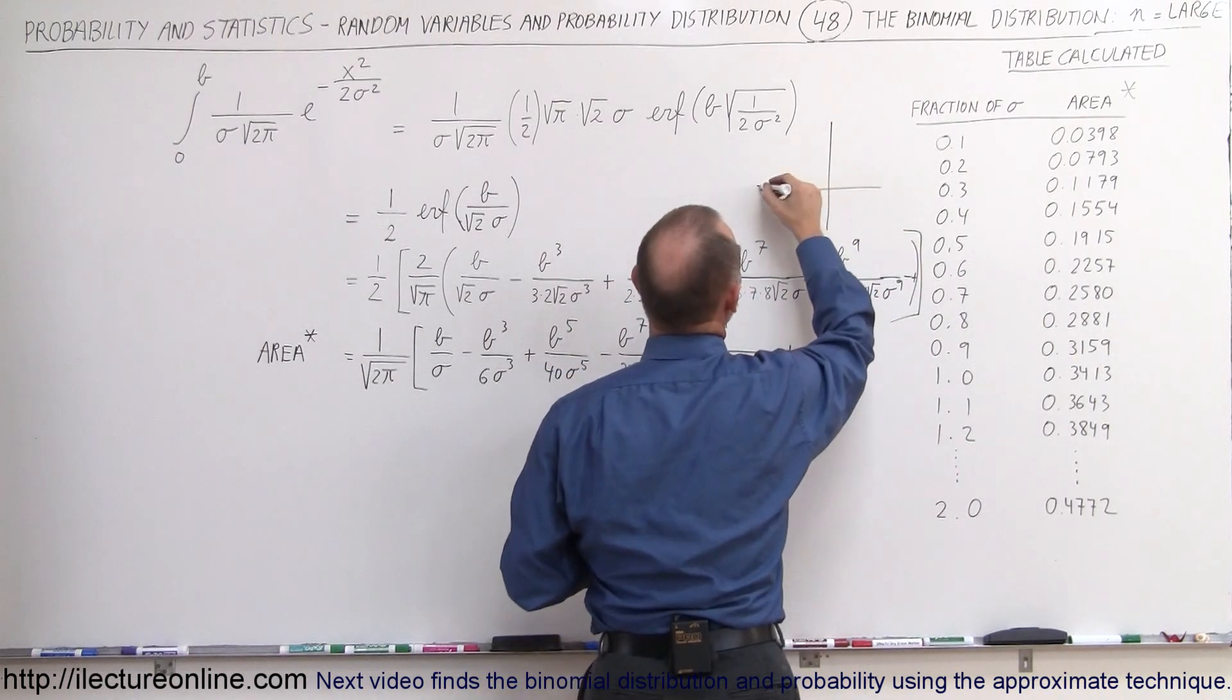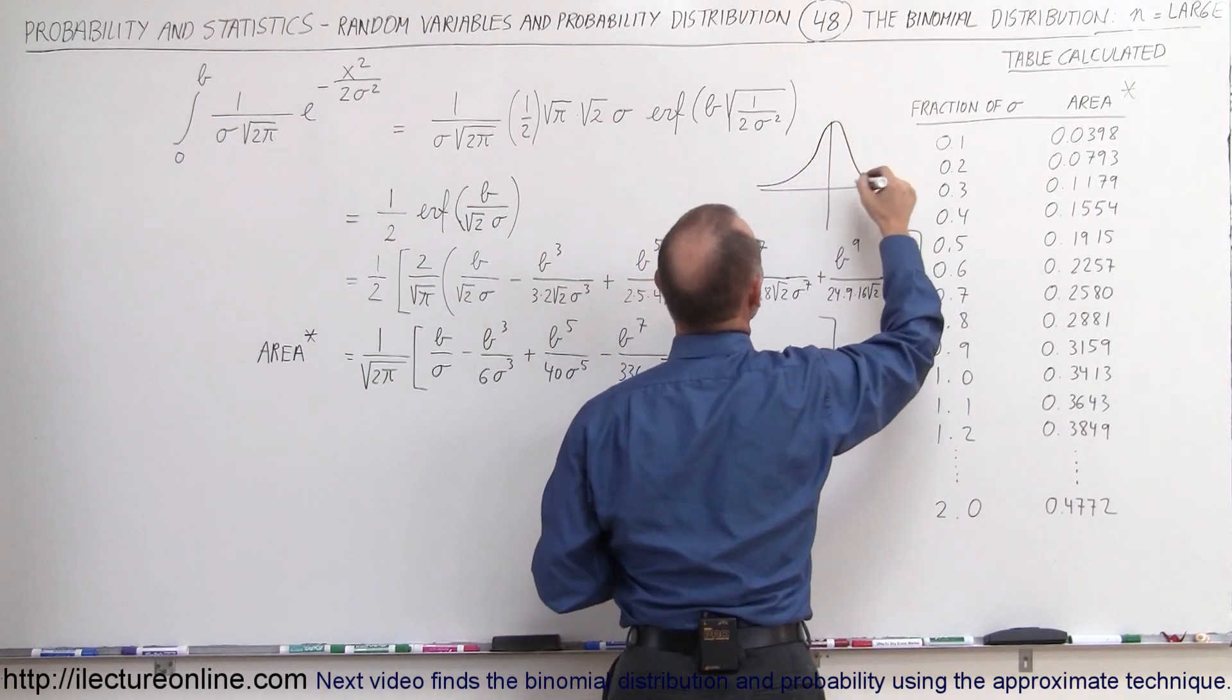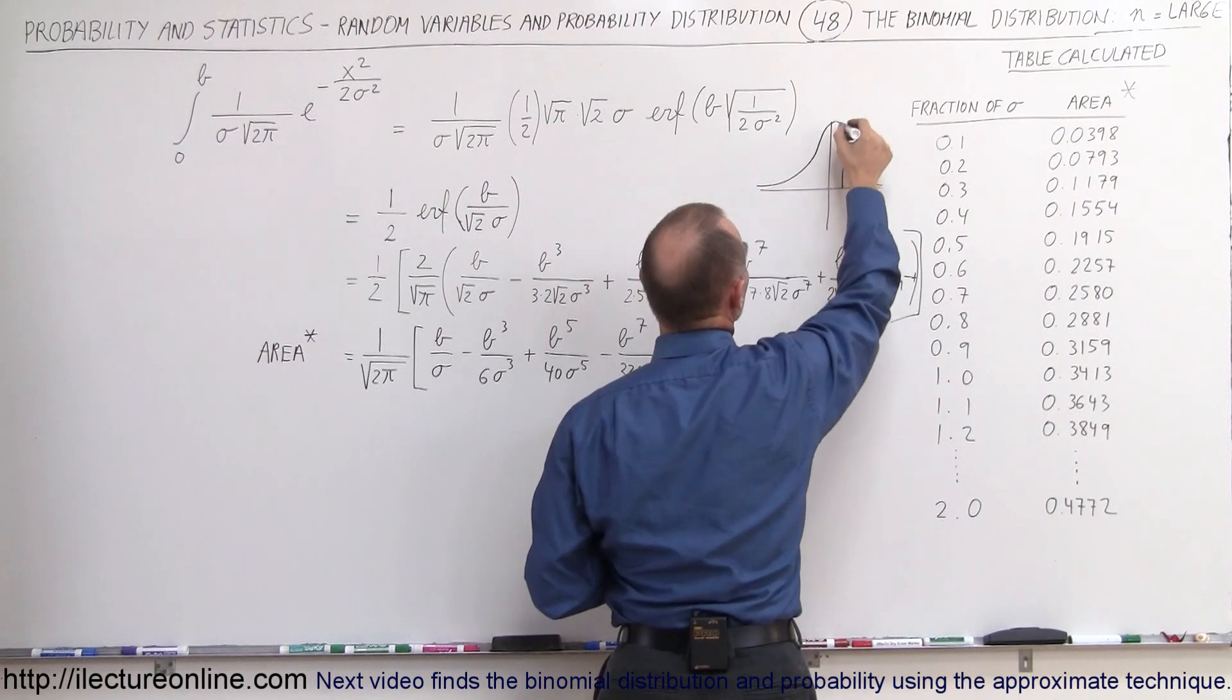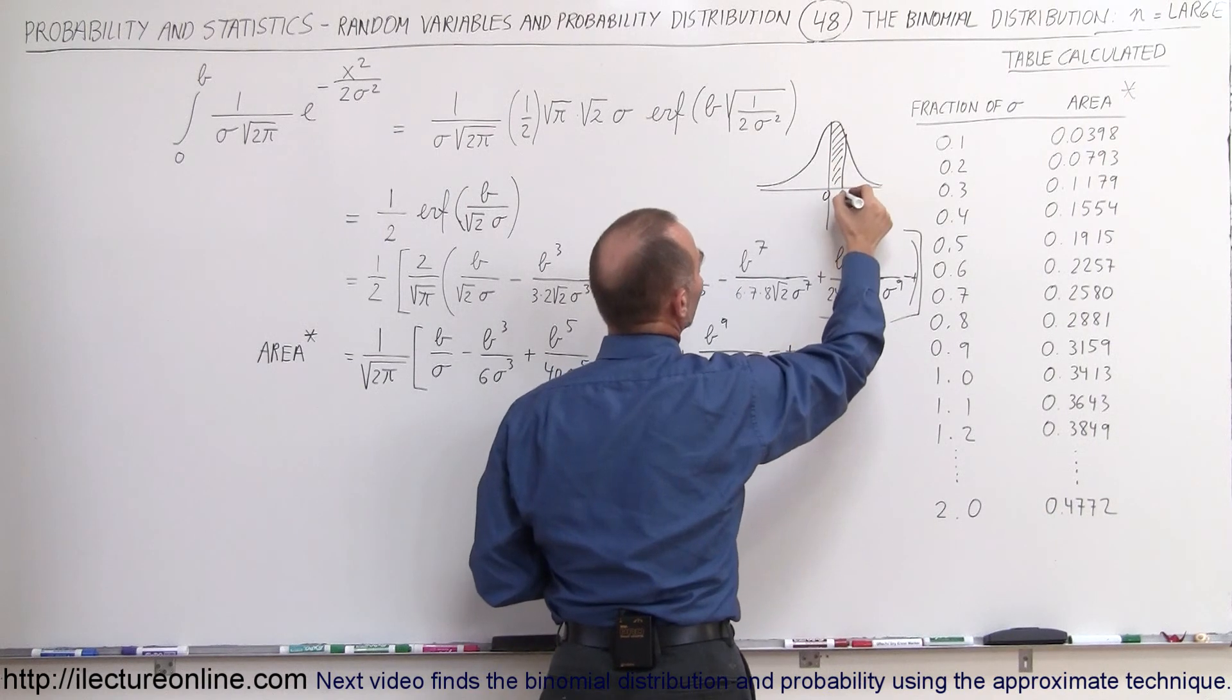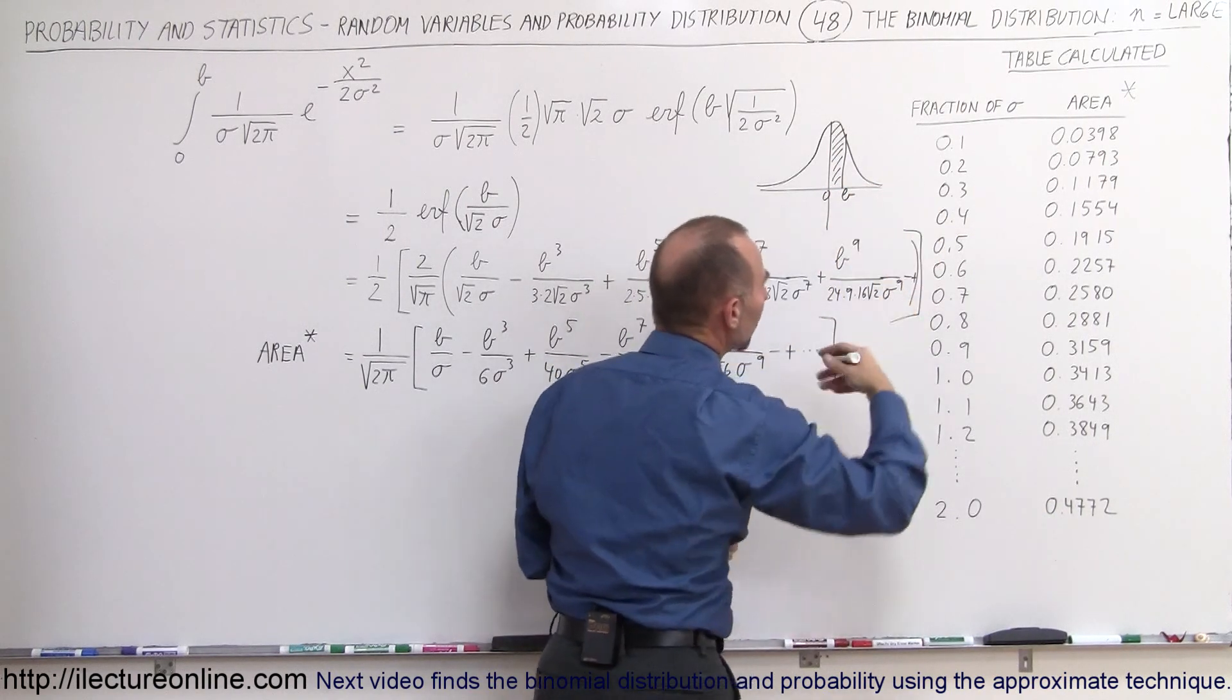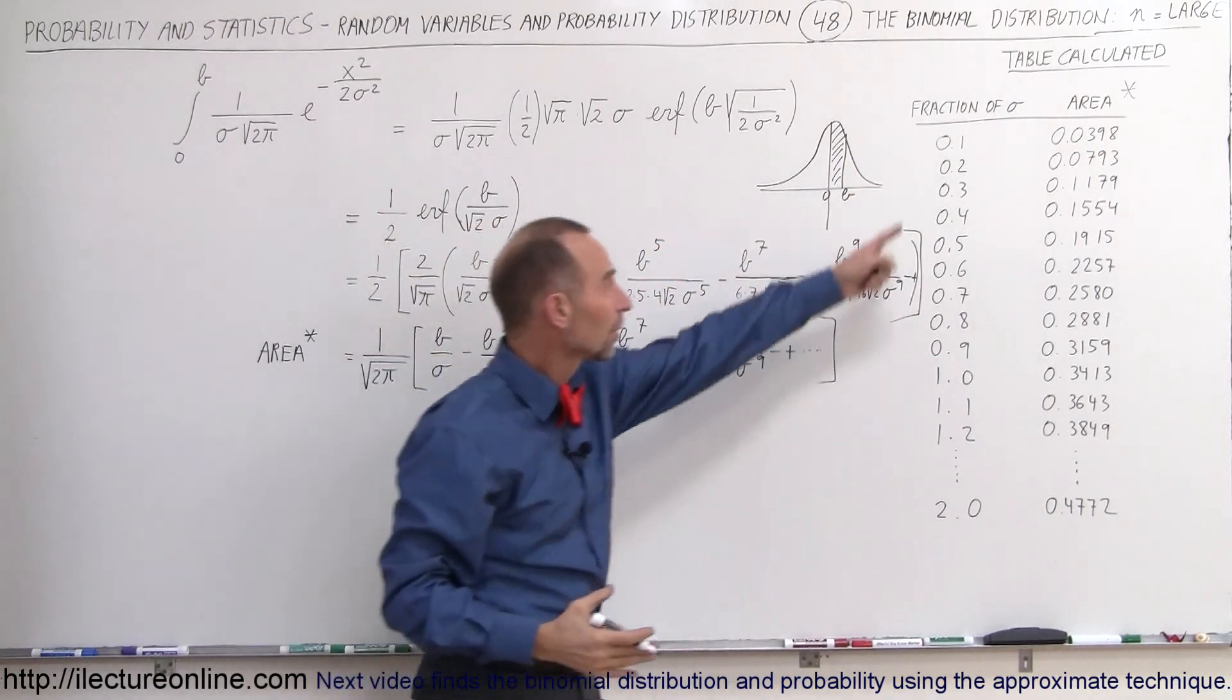This is of course specific to having a normal distribution where we want to find, for example, the area underneath the curve of a portion of that, going from zero to some value for B, where B will be some fraction of sigma.